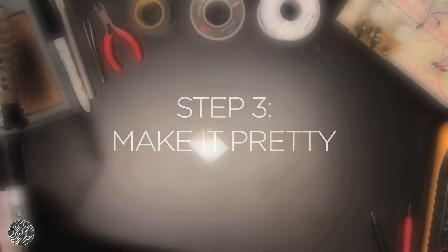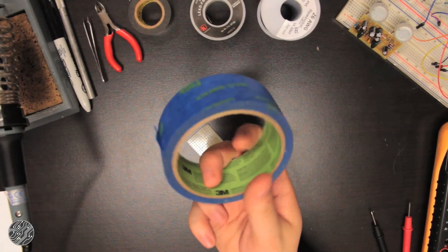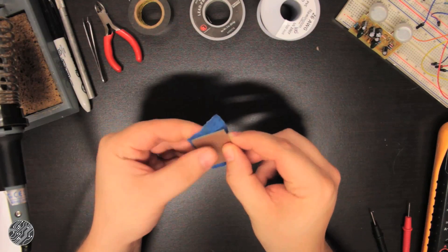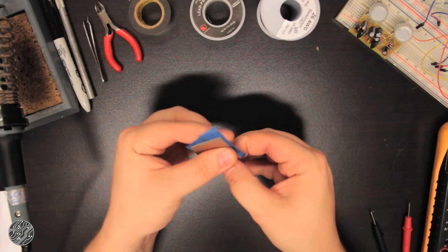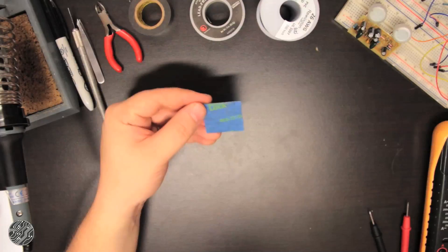Step three: make it pretty. This is by no means necessary, but I like to use a piece of blue painters tape to cover the face of the board. It covers up the excess holes and in my opinion makes it look a little more professional.